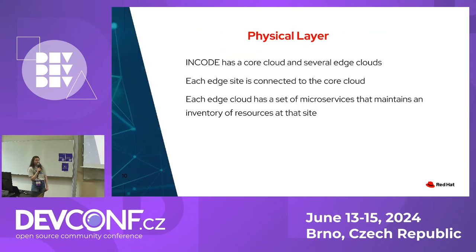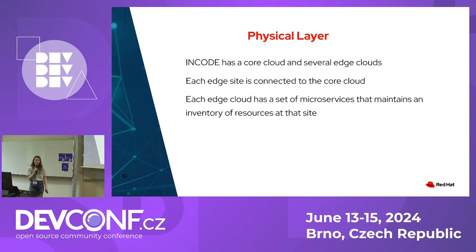The physical layer is made up of all the physical devices. We have a core cloud which connects to different edge cloud sites that can be registered as necessary. These have a set of microservices running on them to keep an inventory of what is available there — IoT devices, sensors, Raspberry Pis, or special edge processing nodes. These resources are available in the central pool, so when the developer finishes writing the application, they can use any of these physical resources to deploy.